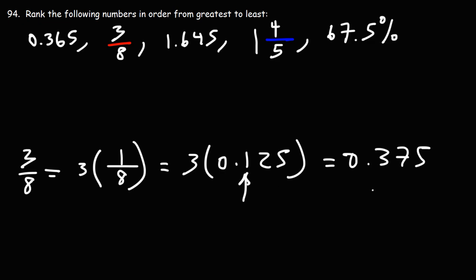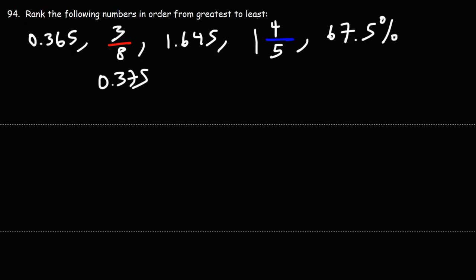100 times 3 will be 300. 25 times 3 is 75, so you get 375. So let's put that number here. And remember, you can use long division to convert this to 0.375 or your calculator. You can just type in 3 divided by 8 if this is a calculator problem.